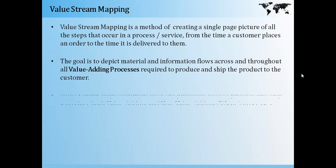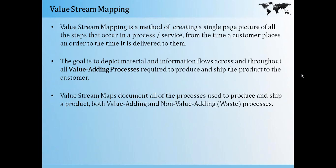The goal of a value stream map is to depict the material and information flow across all the value-adding processes required to produce or ship the product to the customer. A value stream map documents all the processes used to produce and ship the product — both value-adding and non-value-adding — such as waste like delay, lead time, or transit time where the customer has to wait.